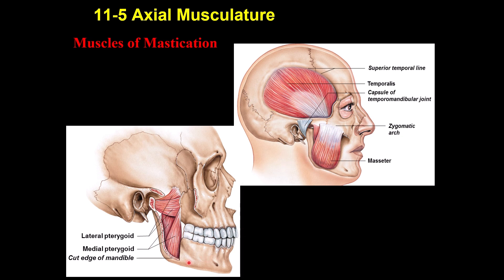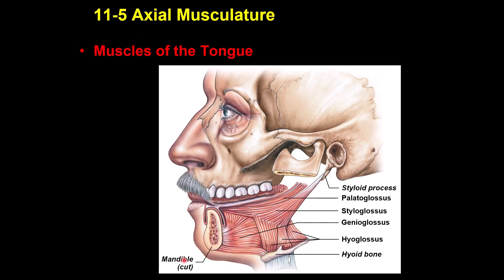There are also two other muscles that move the jaw side to side — the lateral pterygoid and the medial pterygoid. So the lateral and medial pterygoids also move the jaw side to side.